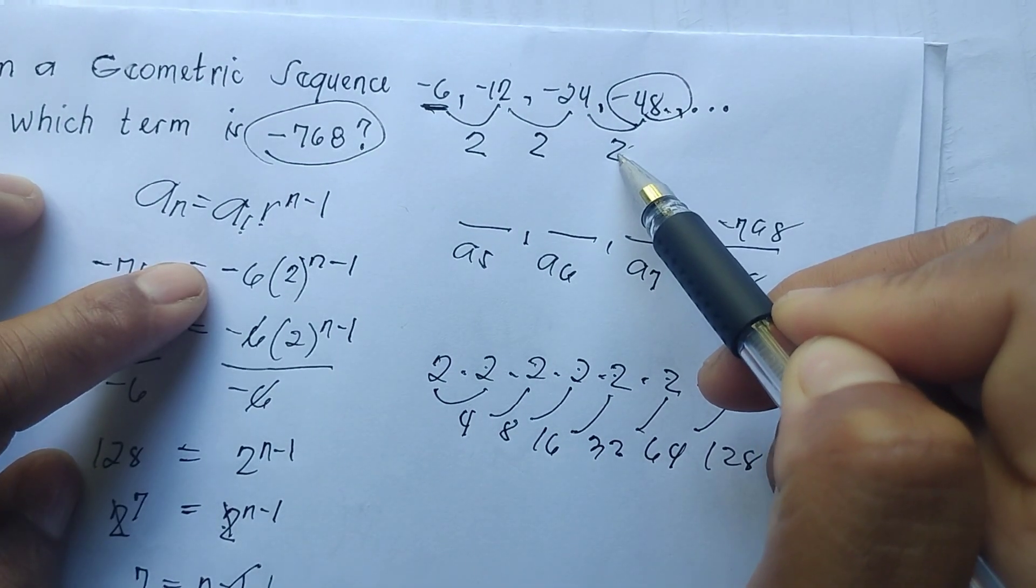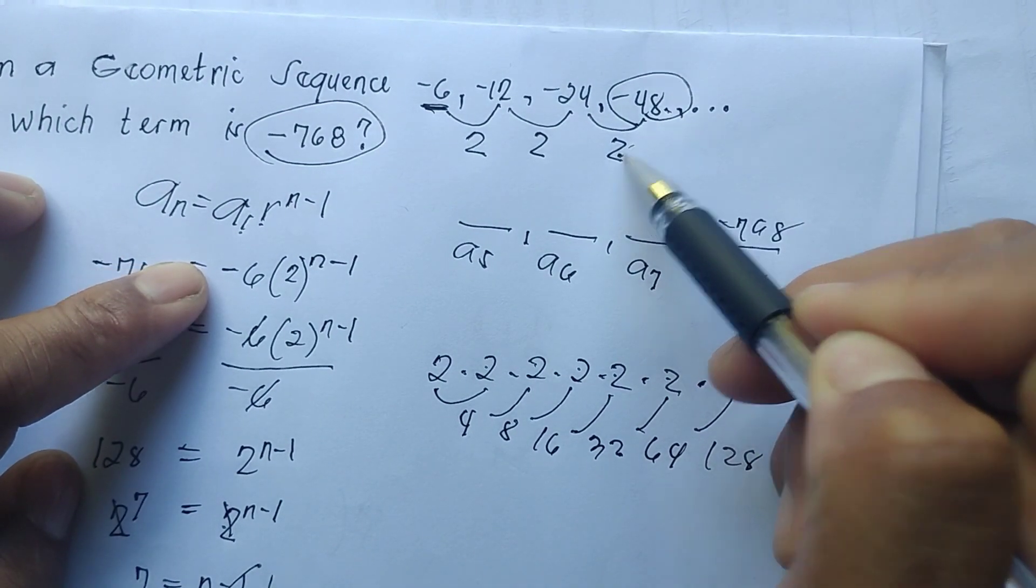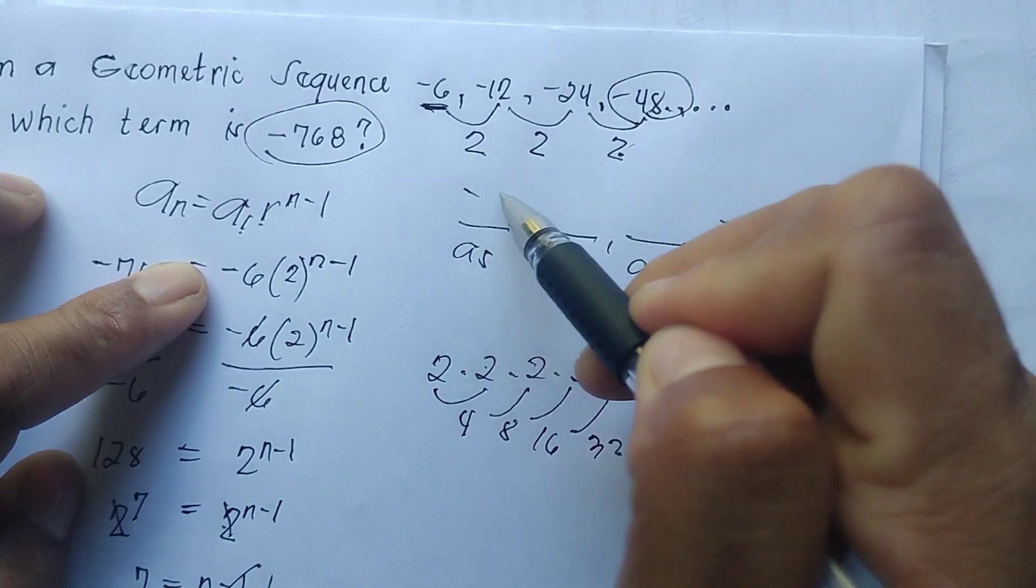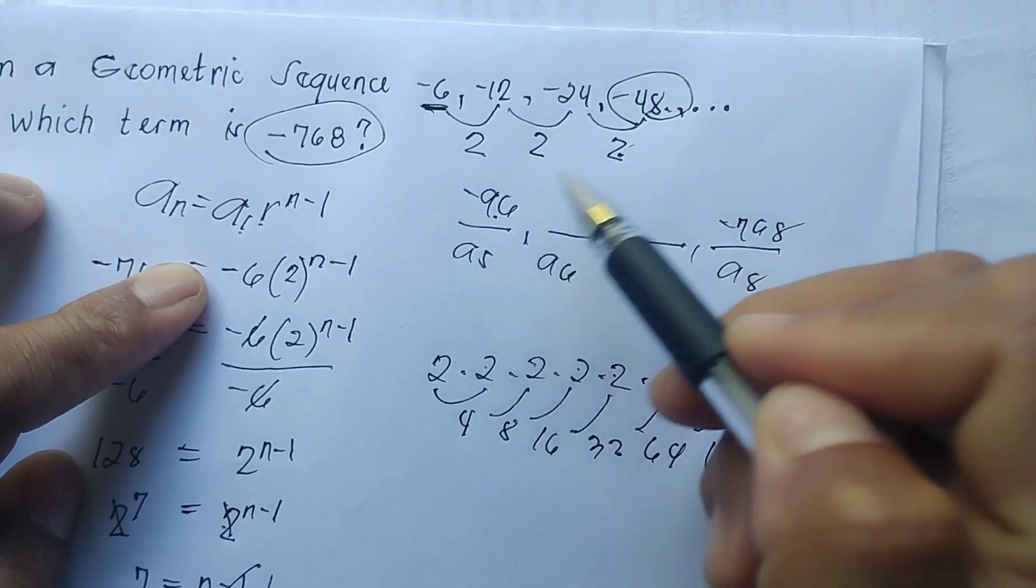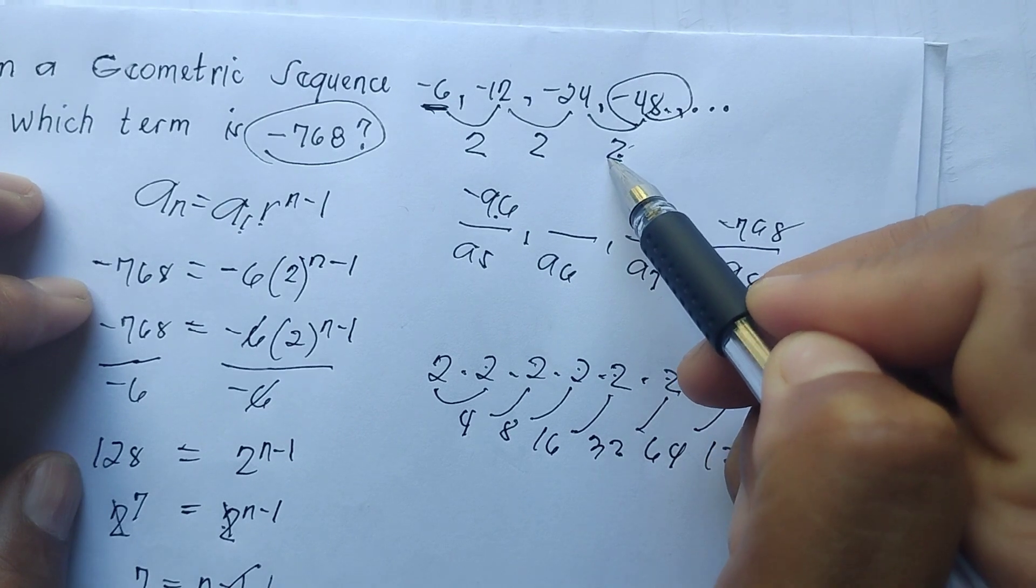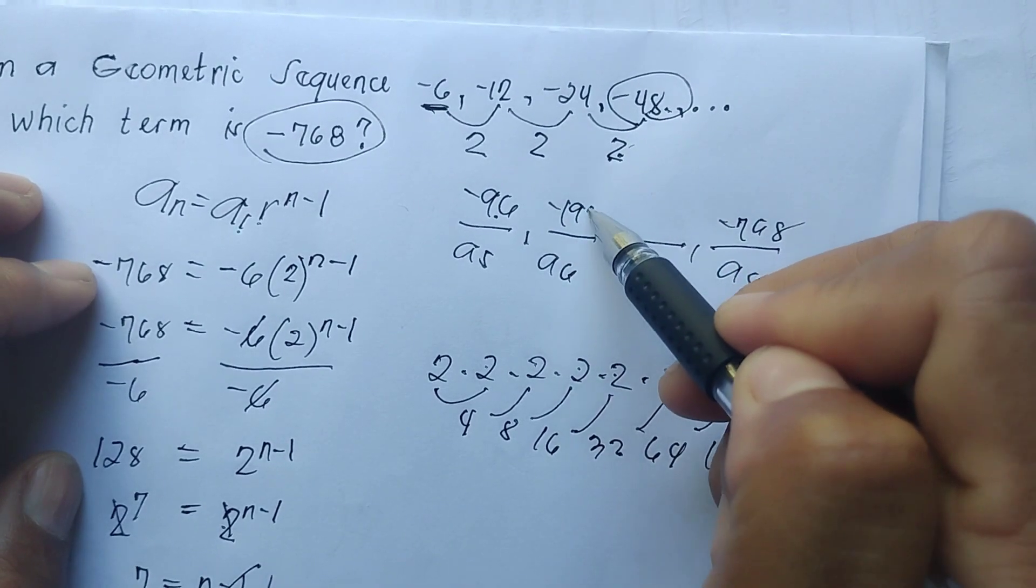So our eighth term is this -768. We'll start here multiplying by the common ratio, which is 2. So 2 times -48 gives you -96. -96 times the common ratio of 2 you'll get -192.